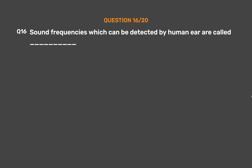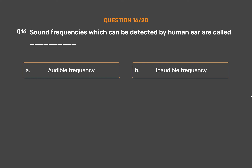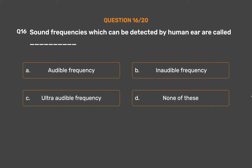Question number 16. Sound frequencies which can be detected by human ear are called underscore. Option A, Audible frequency; Option B, Inaudible frequency; Option C, Ultra audible frequency; Option D, None of these.